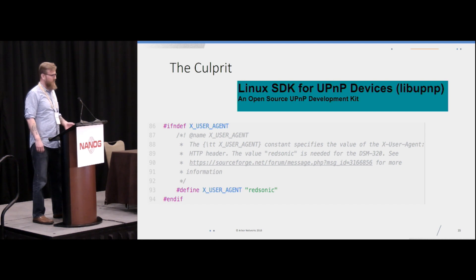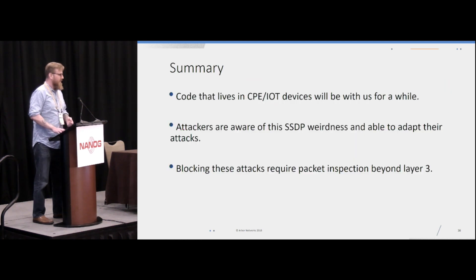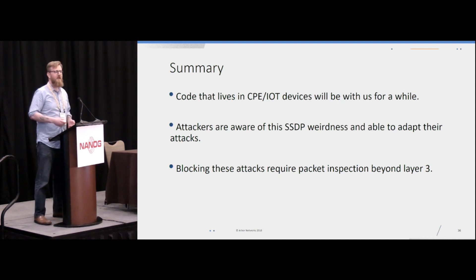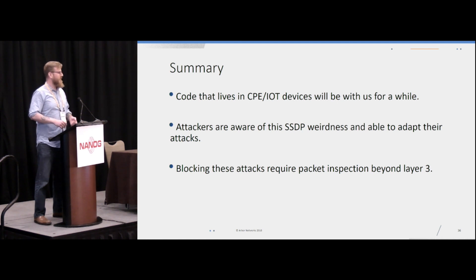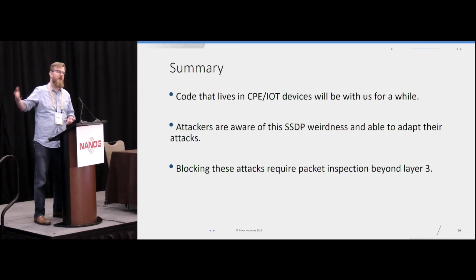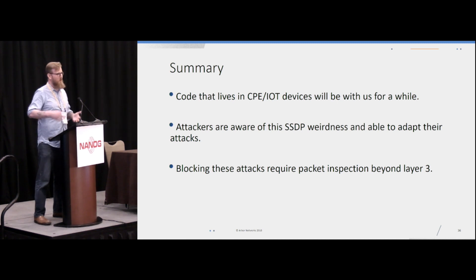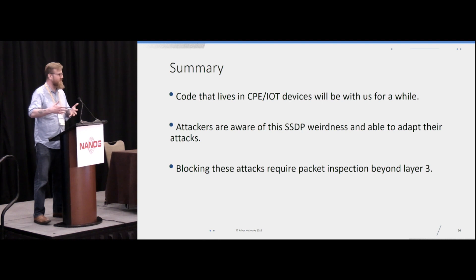This open source library is used in all sorts of CPE and IoT devices — DVRs, webcams, lots of different stuff. The library code that exists in these IoT devices is sometimes really hard to update. Even if we did fix this — and I'm not even sure it would be considered a bug, it's just strange behavior — this code is going to live on these devices for a long time given their large install base. The more important point is that attackers are aware of this behavior. They will shift their tactics: if one attack isn't working, they'll focus on this more random source port. Blocking these attacks requires much deeper packet inspection — looking at all UDP packets to see if they have an HTTP response that looks like SSDP, and dropping those packets.